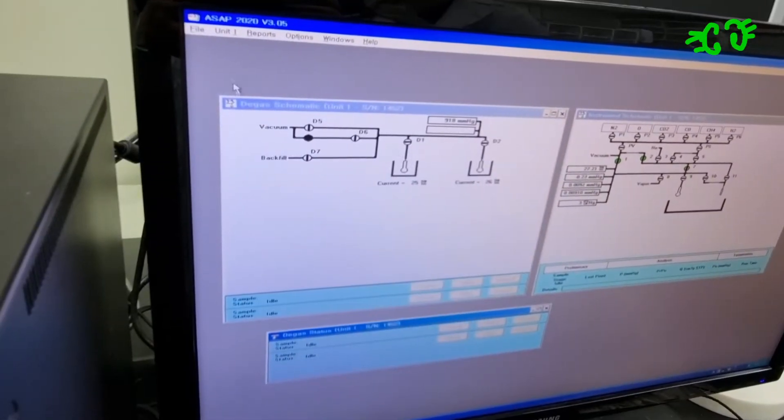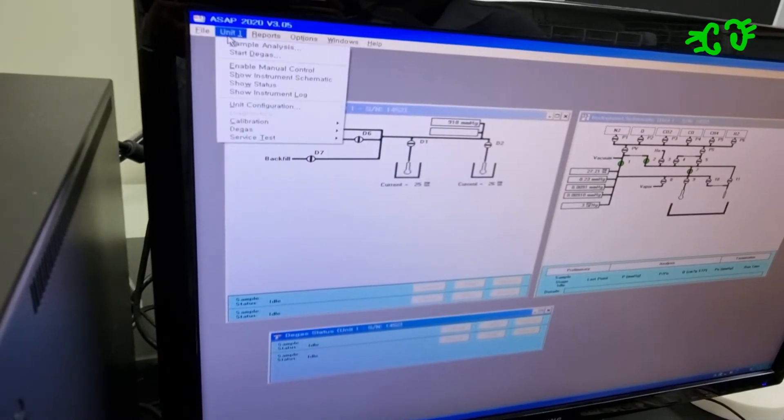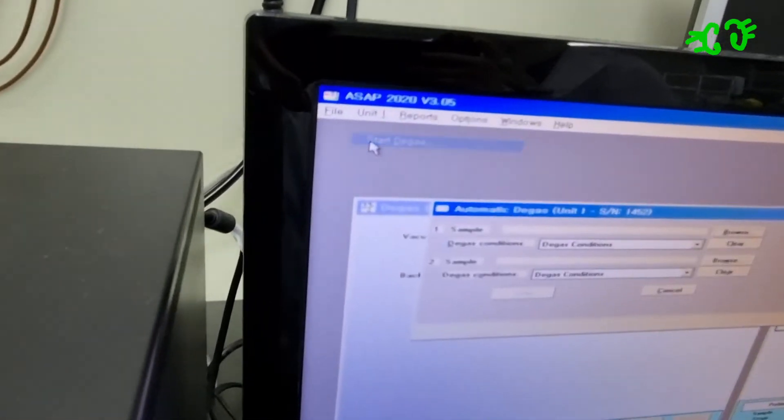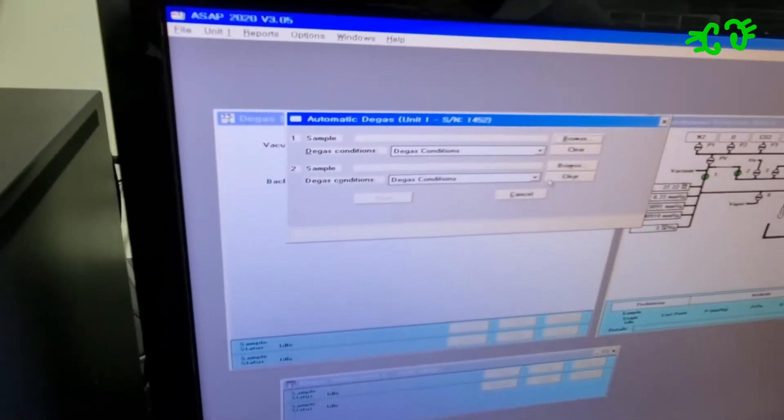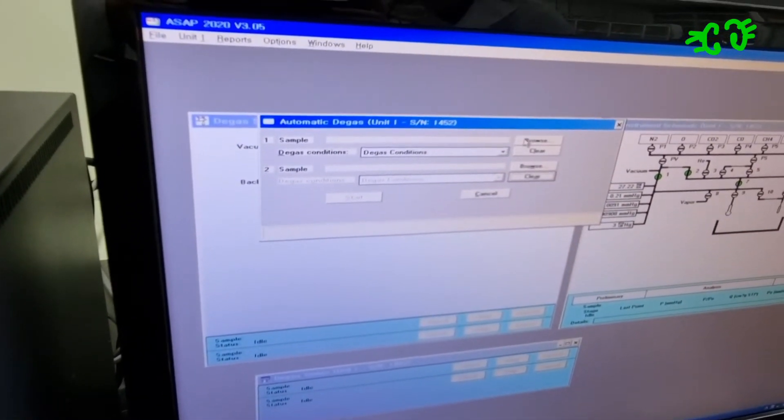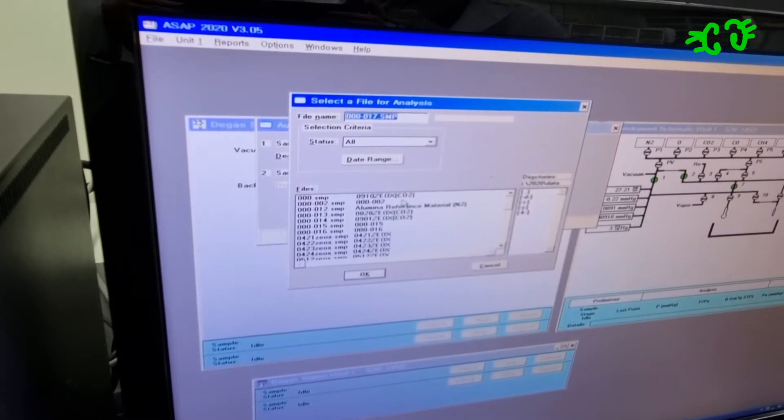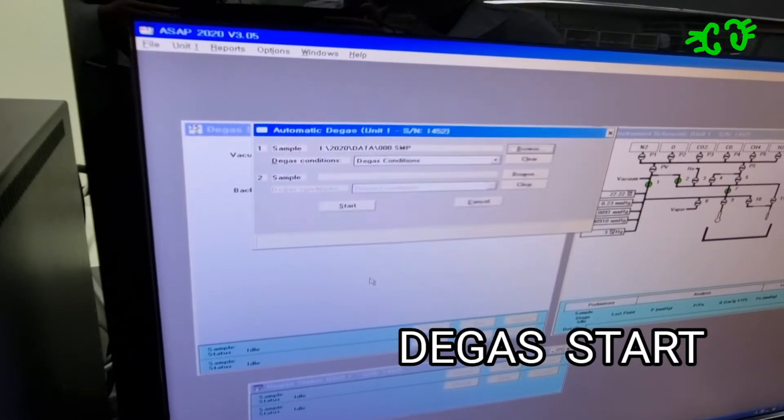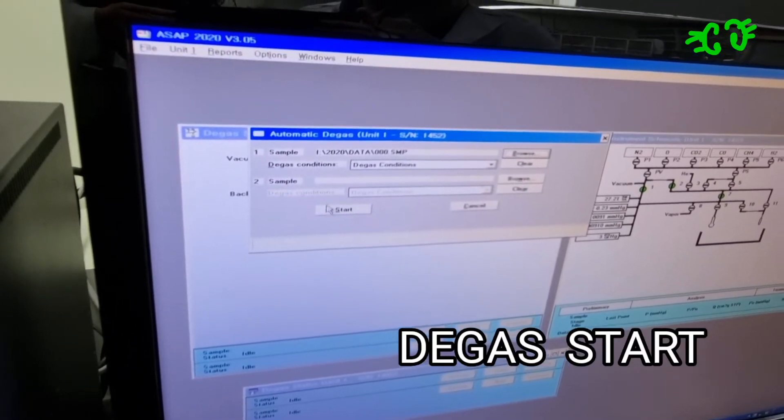To start the degassing, you should go into unit 1, start degass. Here we should clear the port you are not using and click browse to select what you are going to degas. Then you should click start.